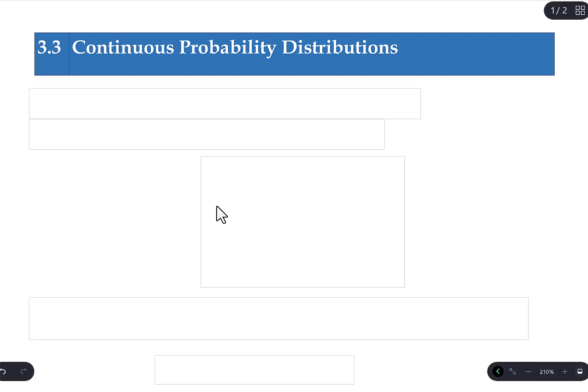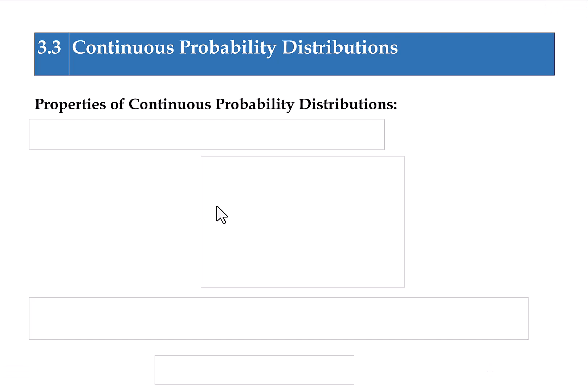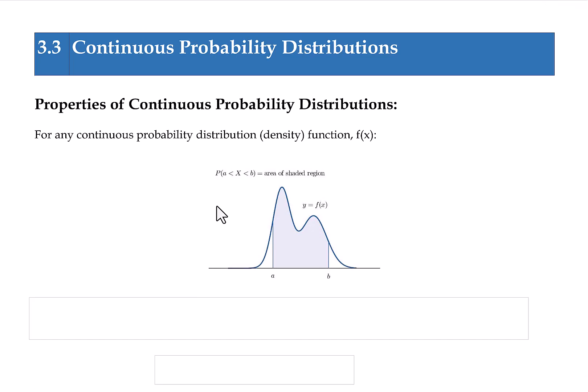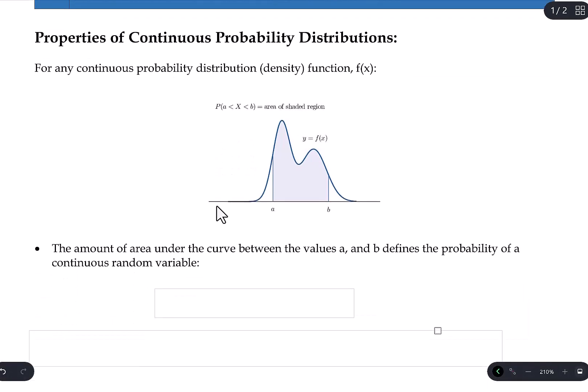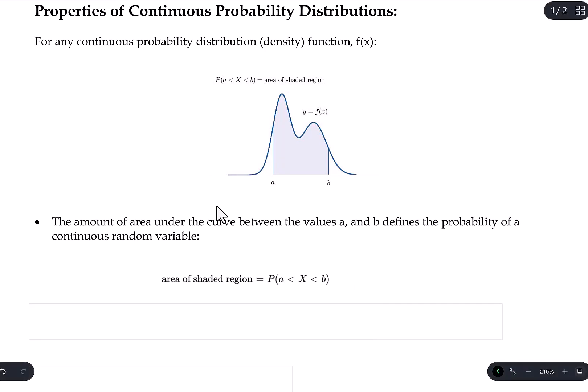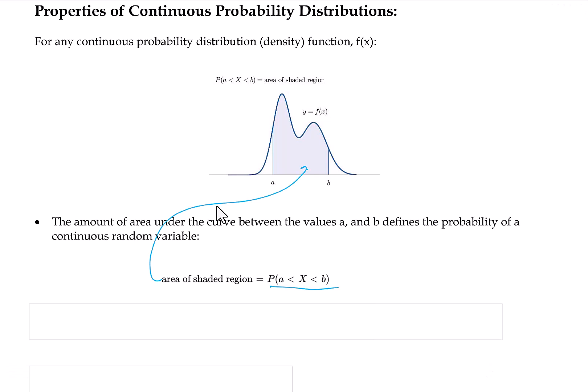Let's start listing out some properties of continuous probability distributions. For any continuous probability distribution function — represented by a curve — the probability between any two values along the x-axis is the total area under the curve between those values. So the amount of area under the curve between values A and B defines the probability of the continuous random variable. The area of that shaded region is equal to the probability of the random variable between A and B.